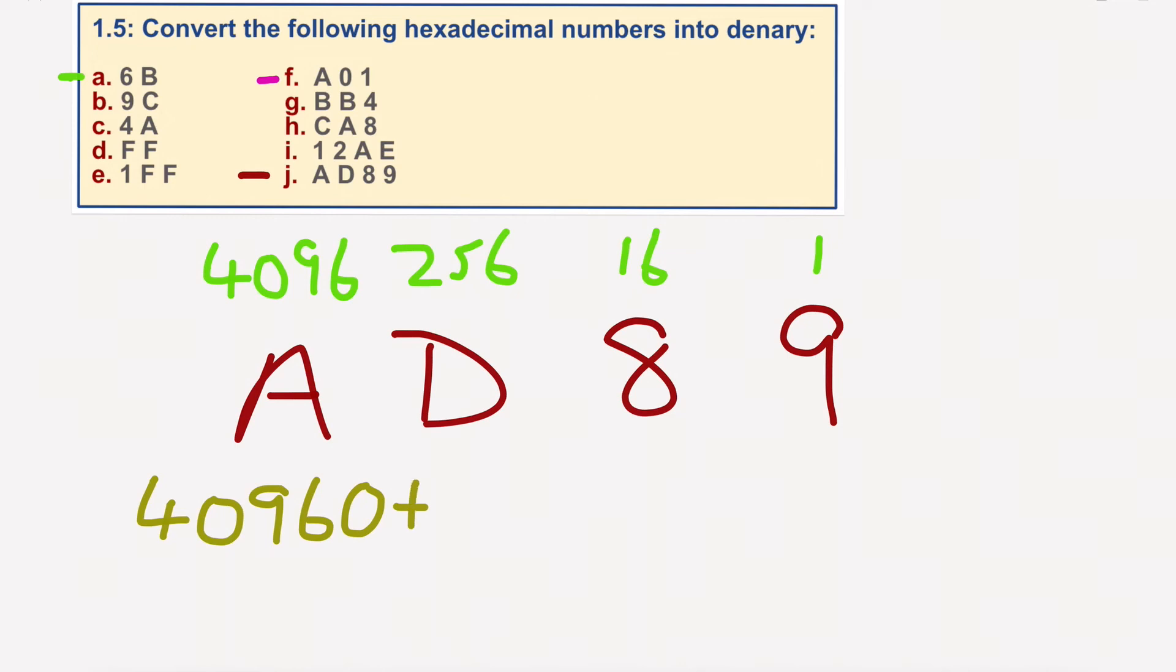Plus D, which is 13. So 13 times 256, 3,328. Then we've got 8 times 16, which equals 128, plus 9.